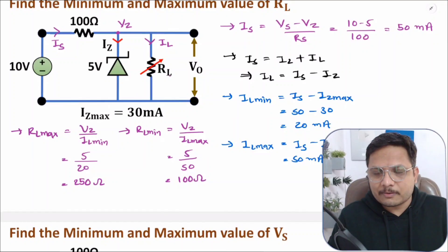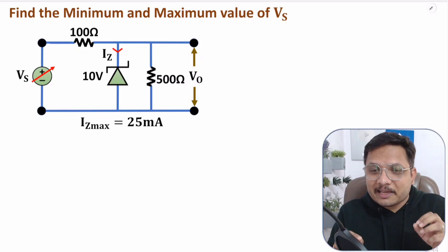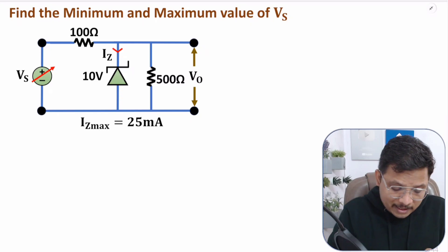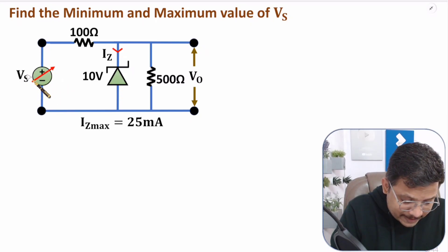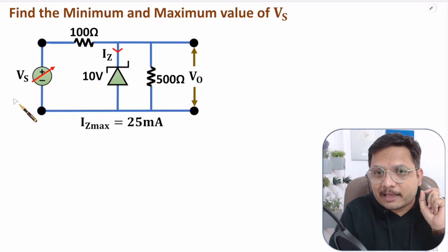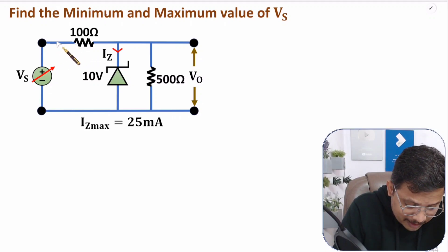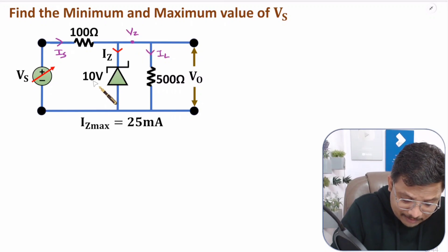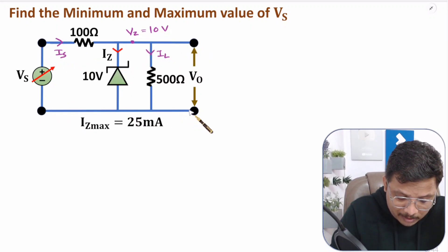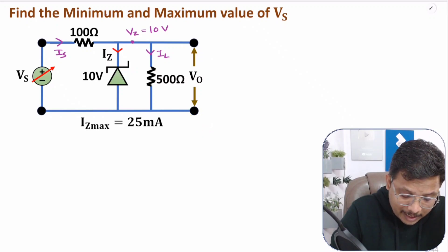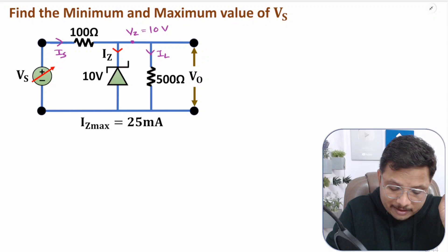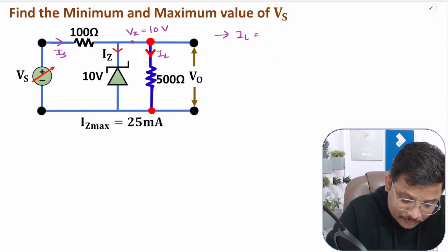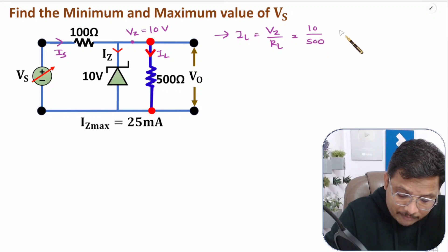Let us solve the second interesting question. Here we need to find the minimum and maximum value of source voltage Vs. First, note down all the data in the circuit. Through the series resistance, current is Is; through the load resistance, current is Il. At this node, voltage is Vz, and Vz is 10 volts as given. Since this is a Zener diode voltage regulator, the output voltage will be 10 volts. Based on Vz and the load resistance, Il can be directly calculated: Il = Vz / RL = 10 / 500 = 20 milliampere.